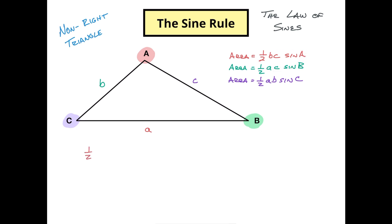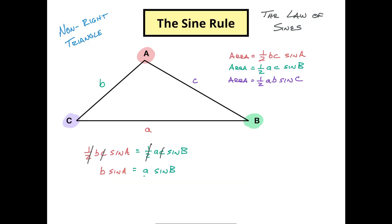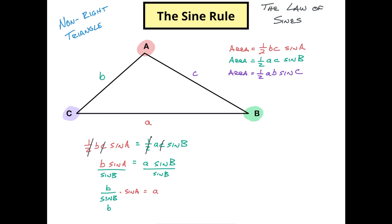If one-half BC sine A equals one-half AC sine B, the one-halves simplify out and side C appears in both, so dividing both sides by C leaves B sine A equals A sine B. To organize the A's and B's, I divide both sides by sine B, giving B over sine B times sine A on one side, and just A on the other. Then dividing both sides by sine A leaves B over sine B equals A over sine A.